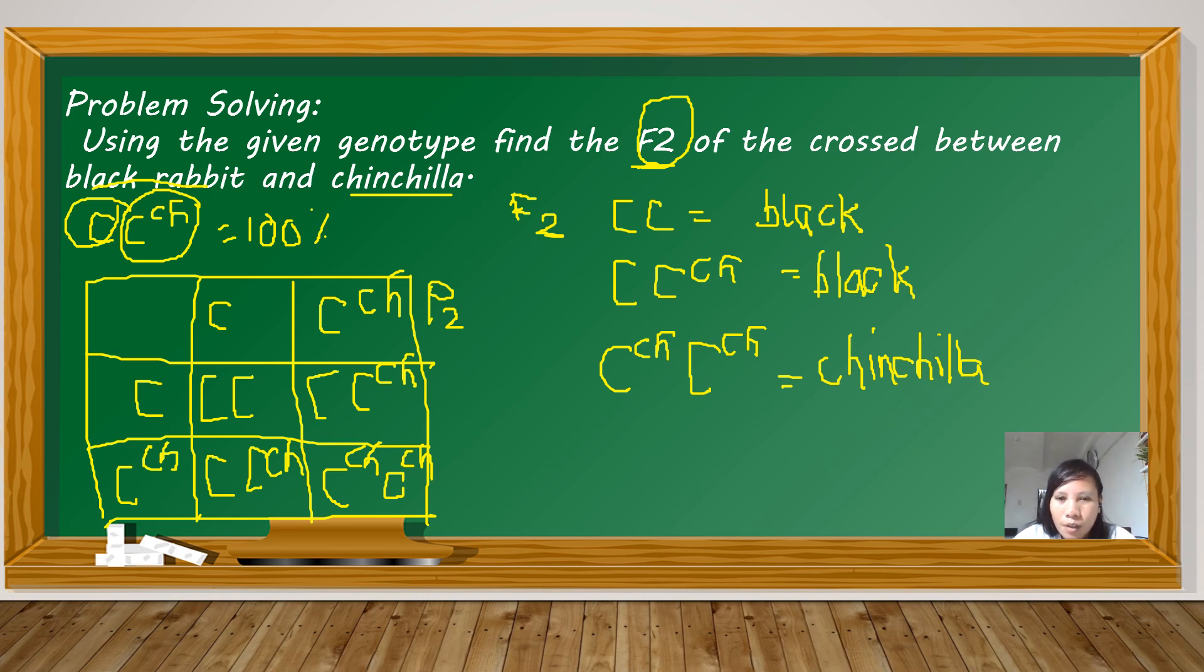Let's go for the percentage. Let's count how many like this in the box. We have, this one. Just one. 1 over 4. Right? Why 4? 4 because there are 4 offspring. And then, this one, one, two. So, that is 2 over 4. And then, for the chinchilla, we have how many? 1 over 4.